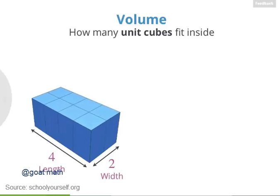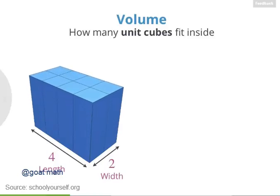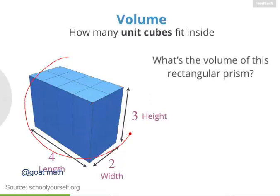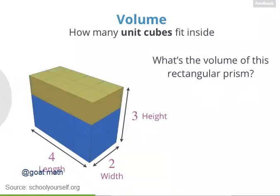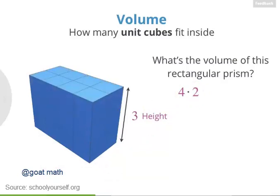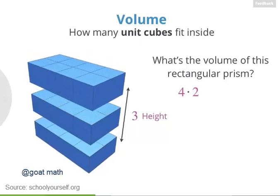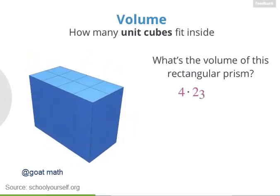Next, let's look at a prism that's a little taller. Just like our prism from before, this prism has a length of 4 and a width of 2. But now this prism also has a height of 3, meaning it's made up of 3 layers of unit cubes stacked on top of each other. Each layer has a volume of 4 times 2, or 8, cubic units, and there are 3 total layers. So the total number of unit cubes is 4 times 2 times 3, and the volume of this prism is 24.